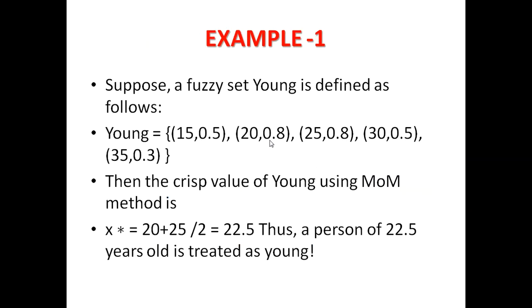Same, we have a young fuzzy set defined here too. But here there are 2 values like 20 and 25 whose membership value are the same and the highest. So in this case, when we remove the mean of membership value, what we will do is we will get 20 plus 25 divided by 2 that will be 22.5.